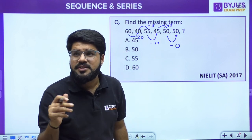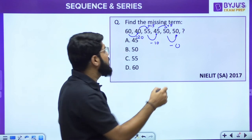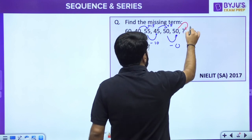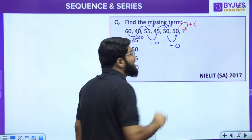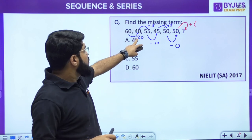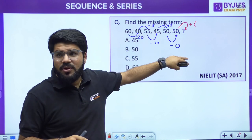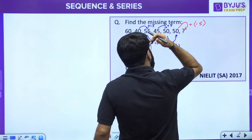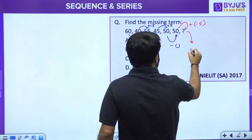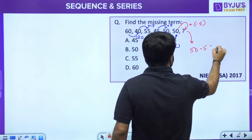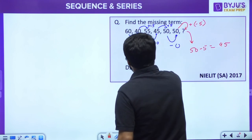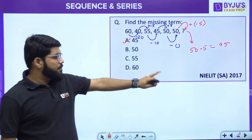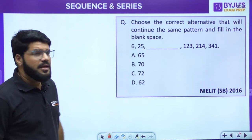Continuing the pattern: next should be a decrease. The sequence of differences is 20, 15, 10, 5, 0, then minus 5. A decrease of zero means 50 stays the same, which is already given. Next is an increment of minus 5 — meaning actually a decrement — so 50 minus 5 equals 45. The answer is option A, 45. This is from NILIT STA Paper 2017.